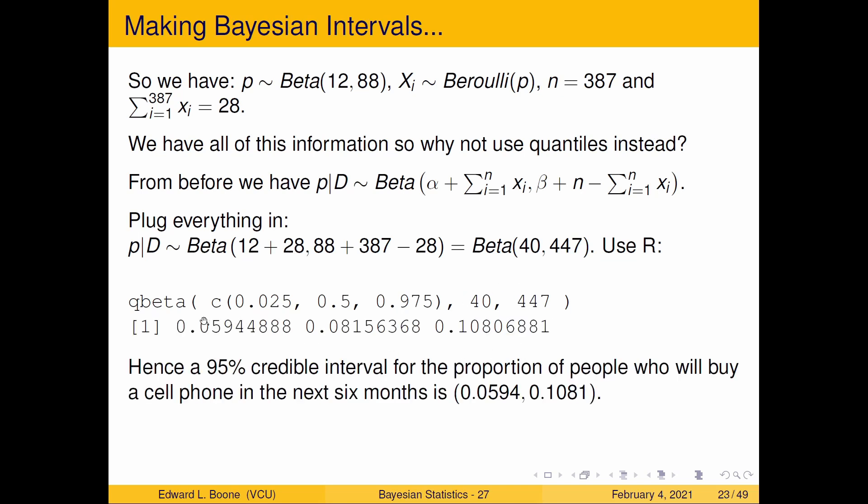Do that, here's what pops out of R and you can see I want this number and this number. My point estimate is about 0.08 and we have a 95% credible interval for the proportion of people who will buy a cell phone in the next six months is 0.0594 and 0.1081. Now how close was this to the other one? Well this is pretty close if you look at these. They're not horridly different, they're, I mean they are different but they're not horridly different. They both are pretty close.